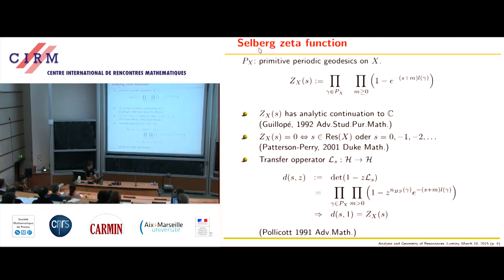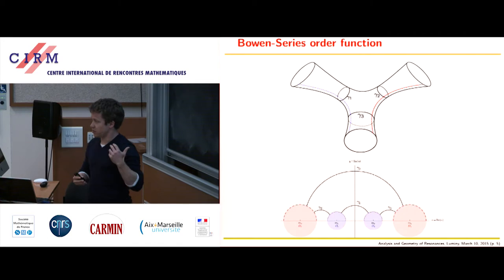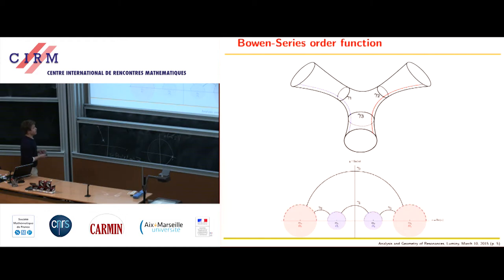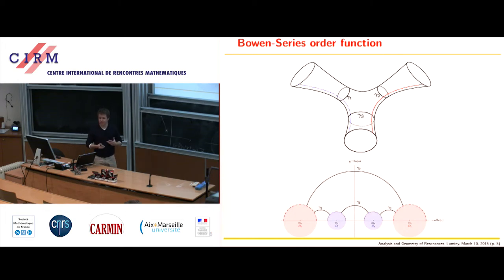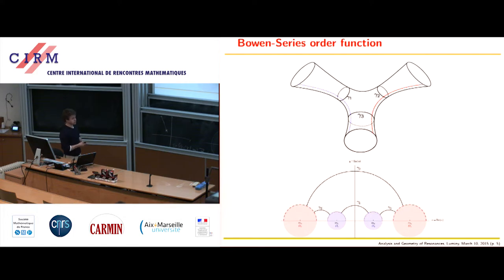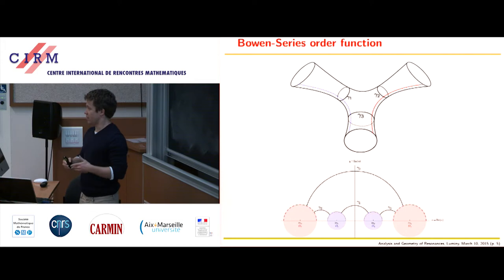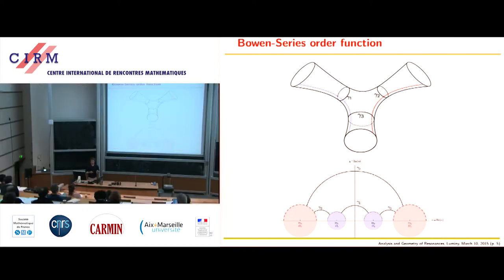This shocked us at first, because it worked so fine for the three-disk system and here it didn't. The reason is that we can write the Selberg Zeta function as a determinant (1 - L_s), but this way of writing it is in no way unique — you could imagine different transfer operators. Apparently the Bowen-Series transfer operator is not the right one in order to understand the resonance chains. Morally, such a transfer operator corresponds to a Poincaré section of the geodesic flow on the surface, and the Bowen-Series Poincaré section adds some artificial asymmetry to the problem which is not there on the surface.